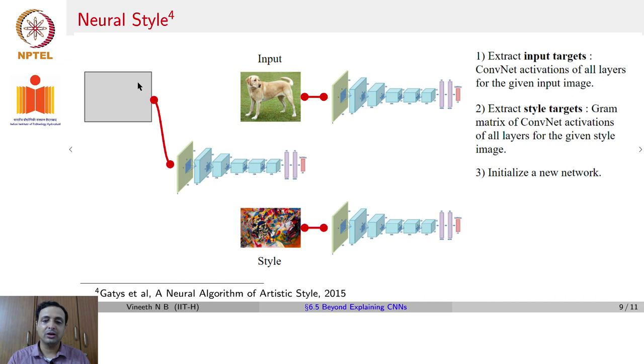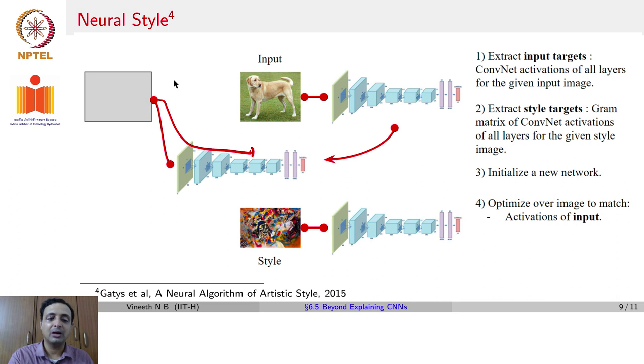Once you obtain these gram matrix of convolutional activations from the style image, now you again take a network, a trained model, and now you give a blank input as an image. And to this image, you backprop to image again, but you try to ensure that the activations that you get at any layer of this model is close to the activations that you get for this image on the same model in a different context. And the gram matrix of activations that you get here resemble the gram matrix of activations that you get for the style model.